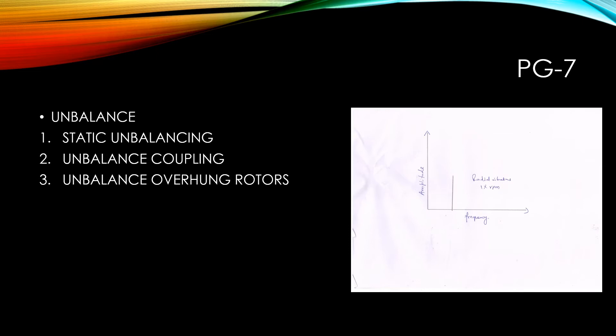For all types of unbalance, the spectrum analysis will show a predominant 1x RPM frequency of vibration. The vibration amplitude at the 1x RPM frequency will vary proportional to the square of the rotational speed. It is always present and normally dominates the vibration spectrum.